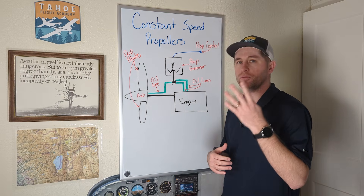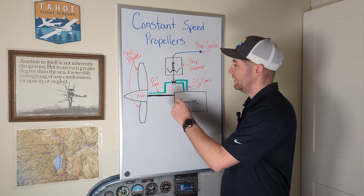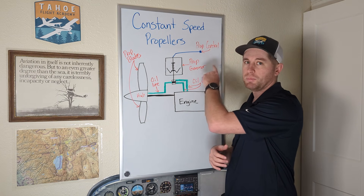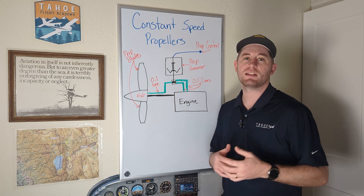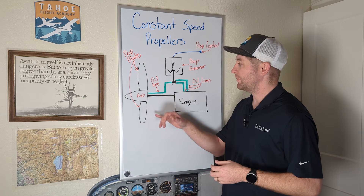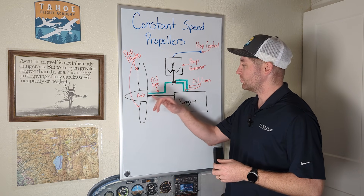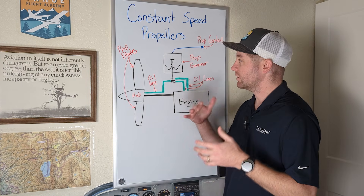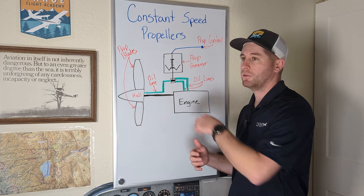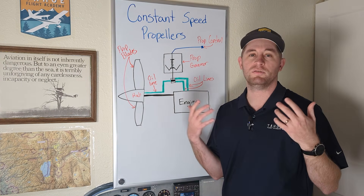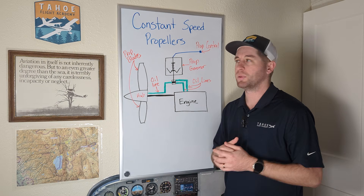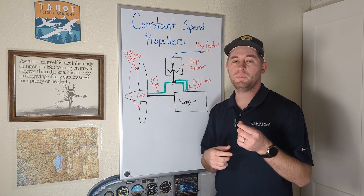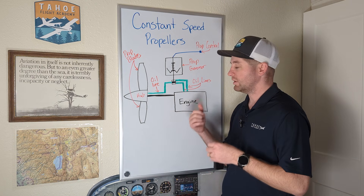A constant speed propeller system has four main parts: the engine, the propeller hub, the prop governor, and the prop control that's inside the cockpit. Just like a fixed pitch prop, a constant speed prop is connected directly to the engine with a shaft. But unlike a fixed pitch prop, the blade angles can change, which is done by the prop governor, which controls the flow of oil in and out of the hub. And the only purpose of the propeller control is to tell the prop governor what RPM you want the engine to maintain.